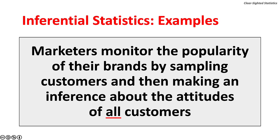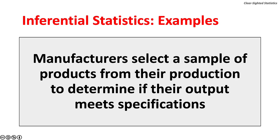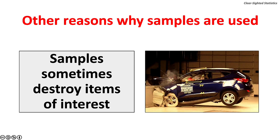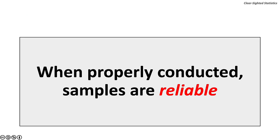Inferential statistics examples: marketers monitor the popularity of their brands by sampling customers and then making an inference about the attitudes of all customers. Chefs taste a few drops of their sauces to make decisions about the entire batch. Manufacturers select a sample of their products from their production to determine if their output meets specifications. Samples are used more often than populations to save time and money. Samples sometimes destroy items of interest, as the photograph of the automobile crash test shows. Sometimes it is difficult to contact the entire population.